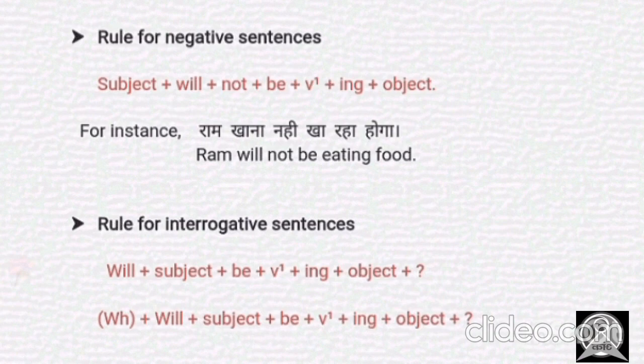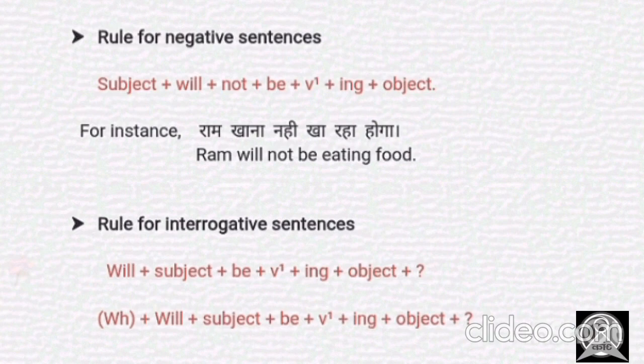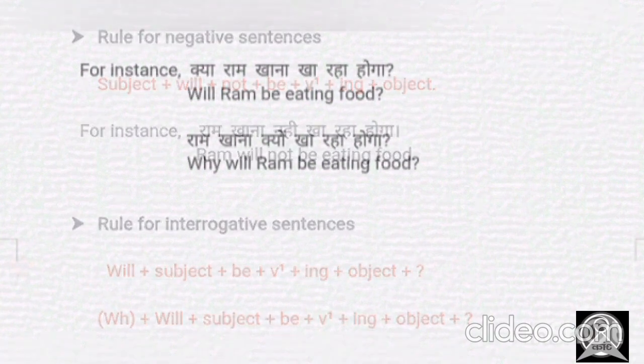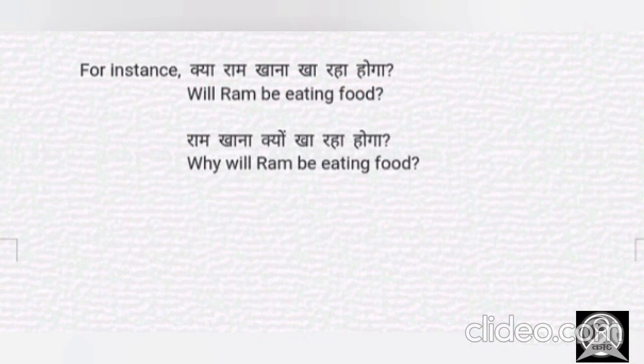The most important thing, and I've mentioned this in every video, is that there are always two ways: either we put the helping verb at the very first, or a WH word. The condition is: when we are getting an answer in yes or no, only then we put the helping verb at the beginning. When we are having any explanation in the answer, then we put the WH word first. For example: 'Will Ram be eating food?'